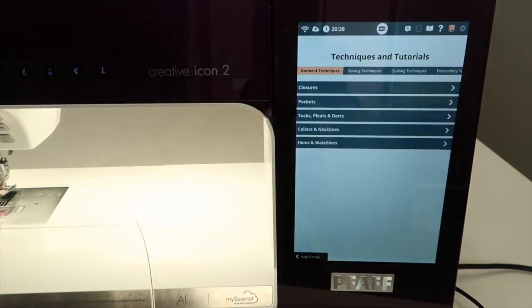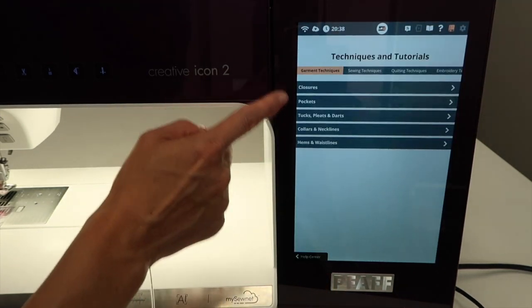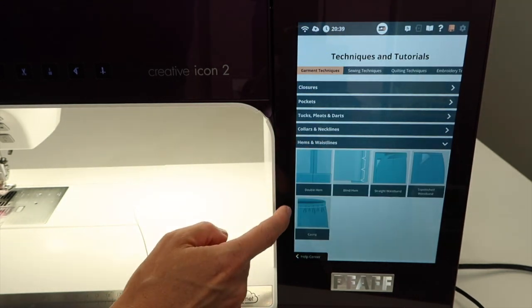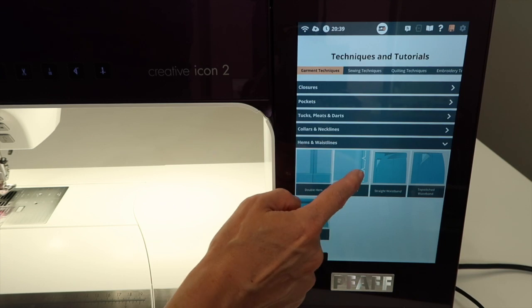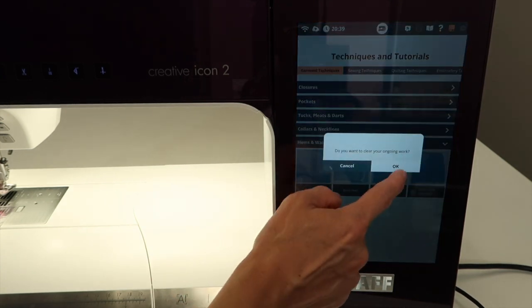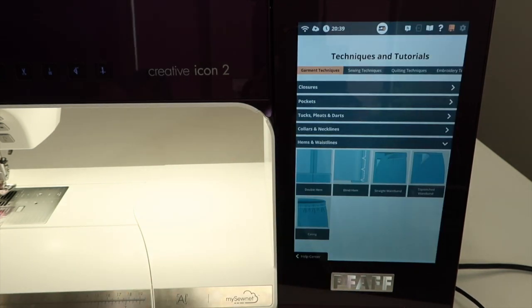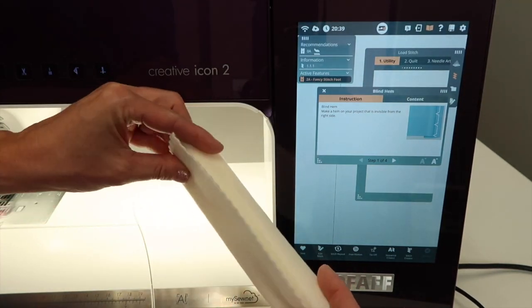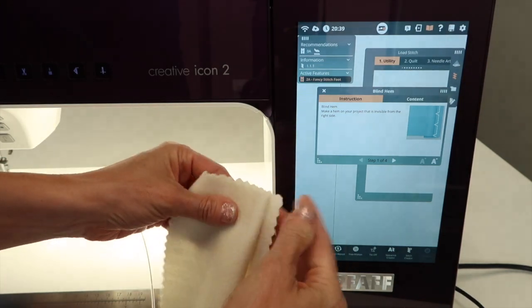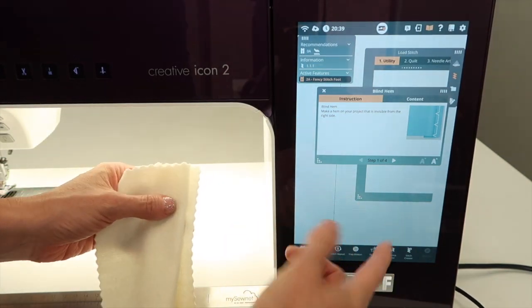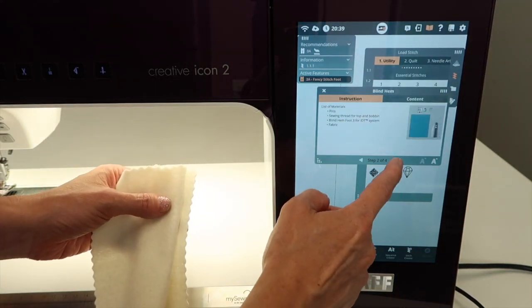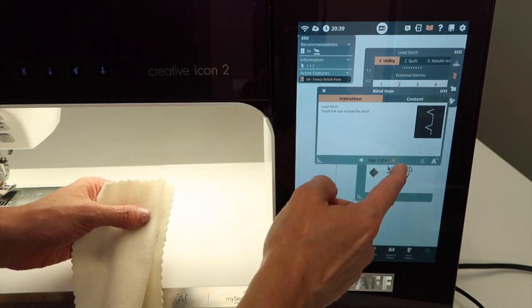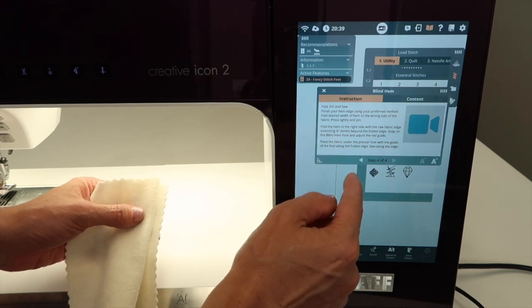You can also find techniques and tutorials. Here with different hems and waistlines, I bet I could actually find a full on tutorial on how to do a blind hem. This wouldn't be a bad idea because one of the things people ask me is how do you fold your fabric? I know how to fold the fabric to get ready for a blind hem. But if you forget, here is the information for preparing, finding your stitch and then also watching a short video on how to do it.